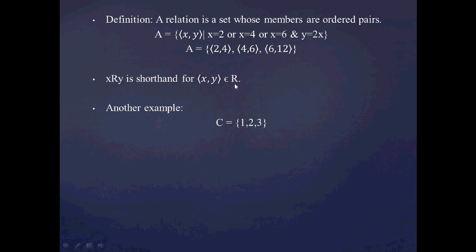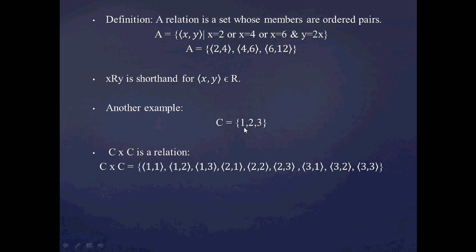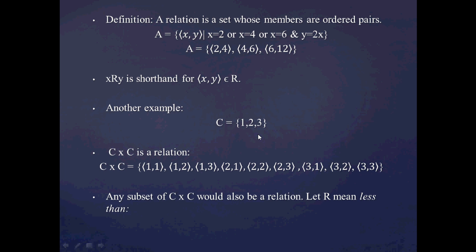Another example of a relation: let's say we have some set C which has the members 1, 2, and 3, and we form the Cartesian product C × C. C × C is going to be a relation itself, because it's a set whose members are ordered pairs. C × C is going to be all possible x values combined with all possible y values — so you pick out 1 as your x value and then you have three possibilities for y: 1, 2, and 3. You move to your next x value, 2, and then you have three possibilities once more. Since there are three members in this set, C × C is going to have three squared members. And any subset of C × C would also be a relation, because C × C has only ordered pairs in it.